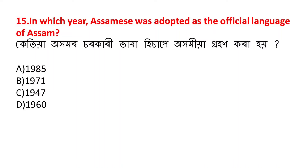In which year was Assamese adopted as the official language of Assam? Ketiyya ahamor sarkari vaha hi saab e ahamia vaha grahan kara hoi sila. The answer is D - 1960.